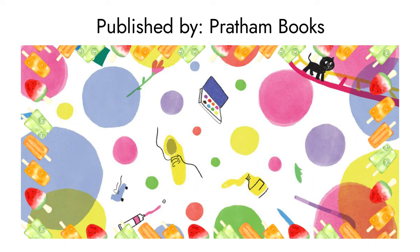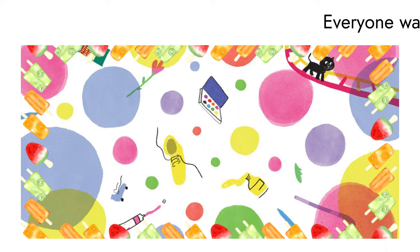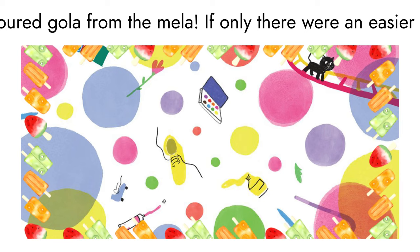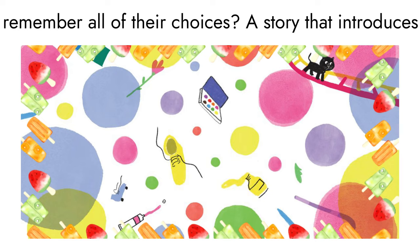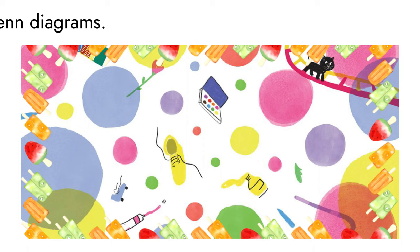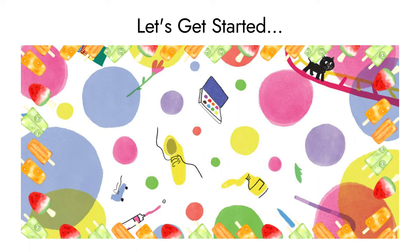Let me share a little brief about today's story. Everyone wants a different colored gola from the nila. If only there were an easier way for Mario to remember all of their choices. Today's story introduces the concept of a Venn diagram — trust me, it's going to be very helpful for you! So let's get started.